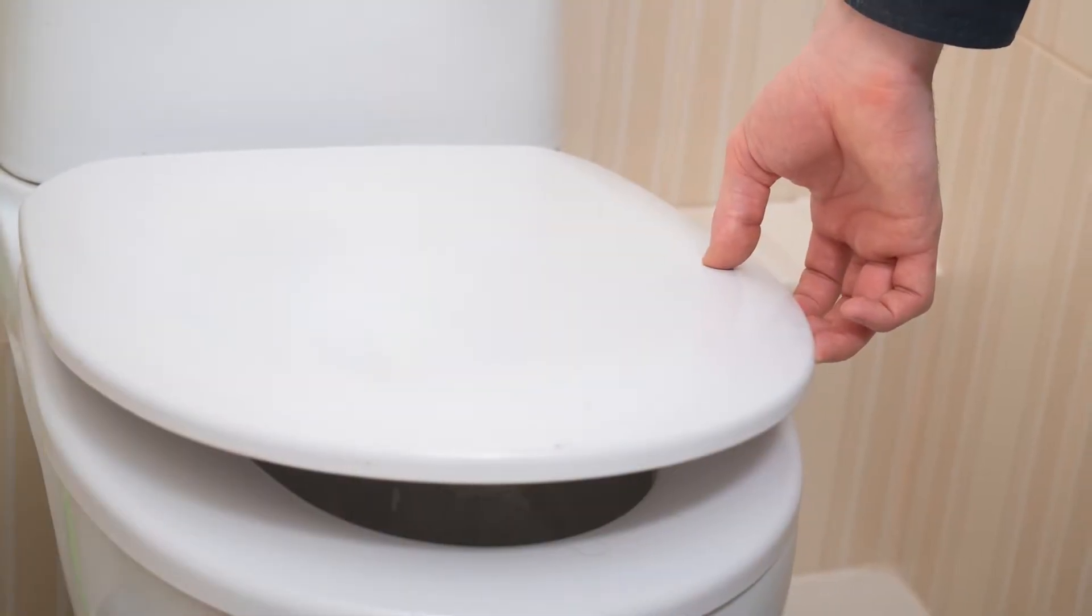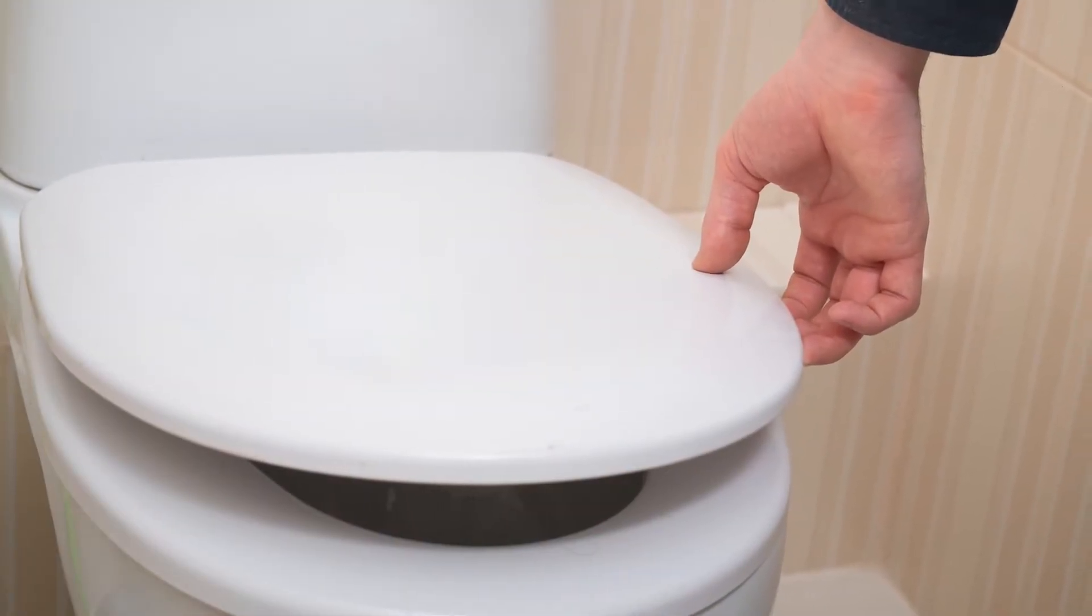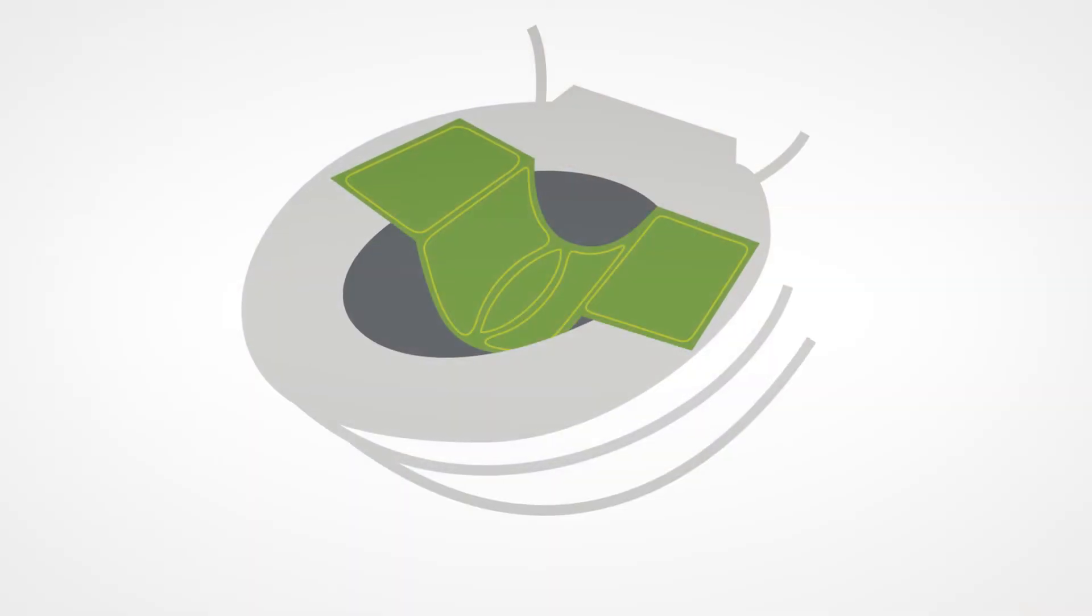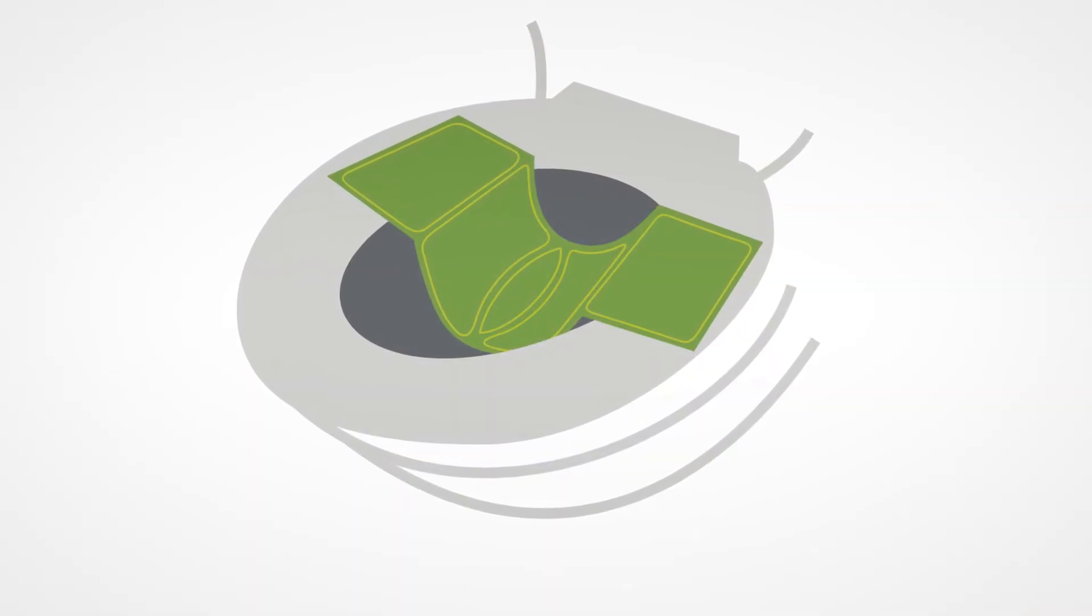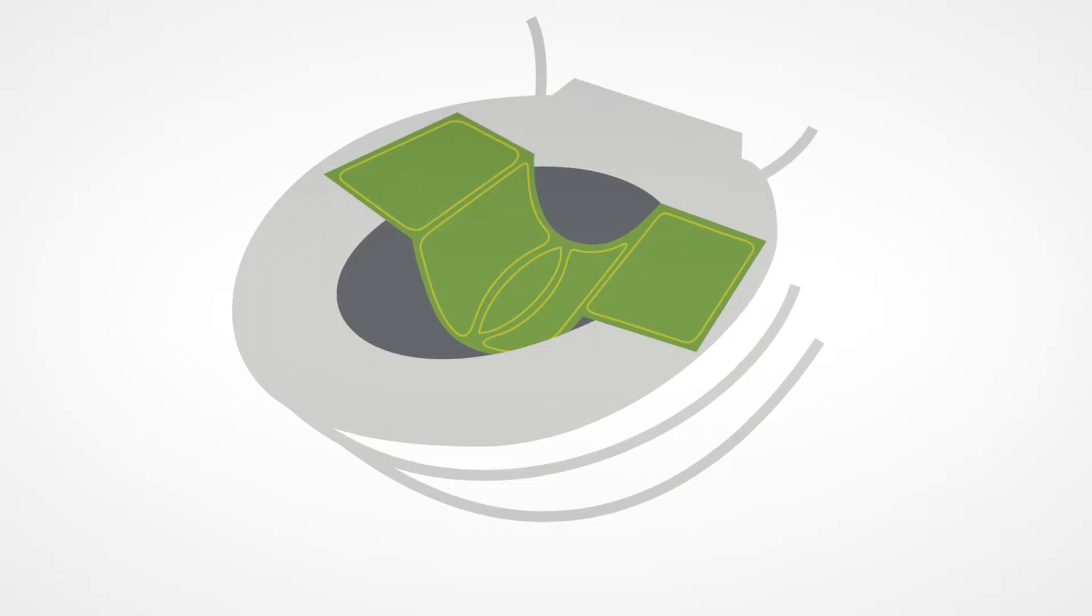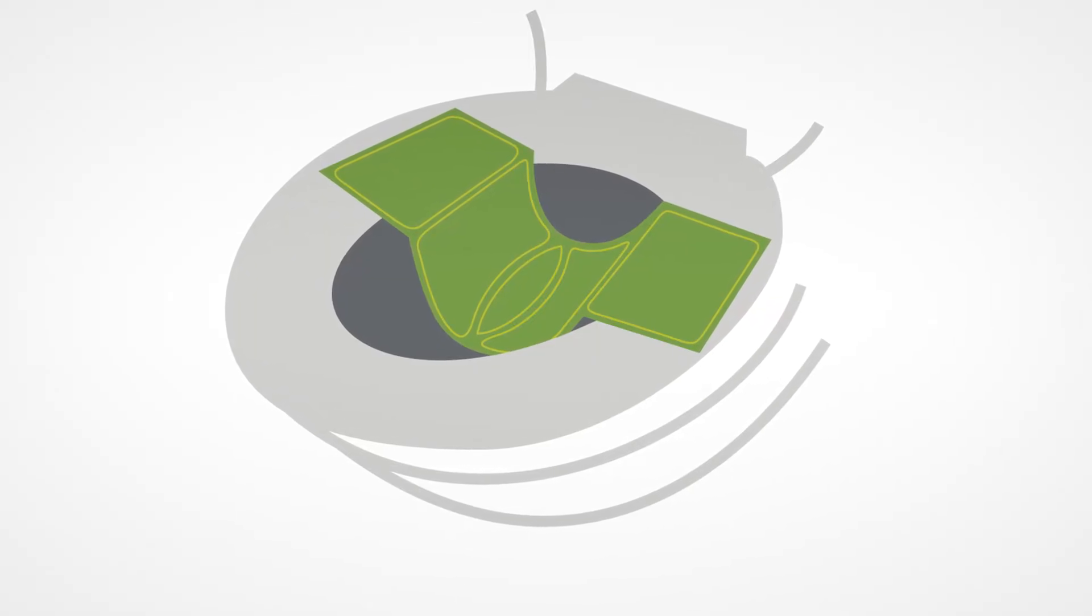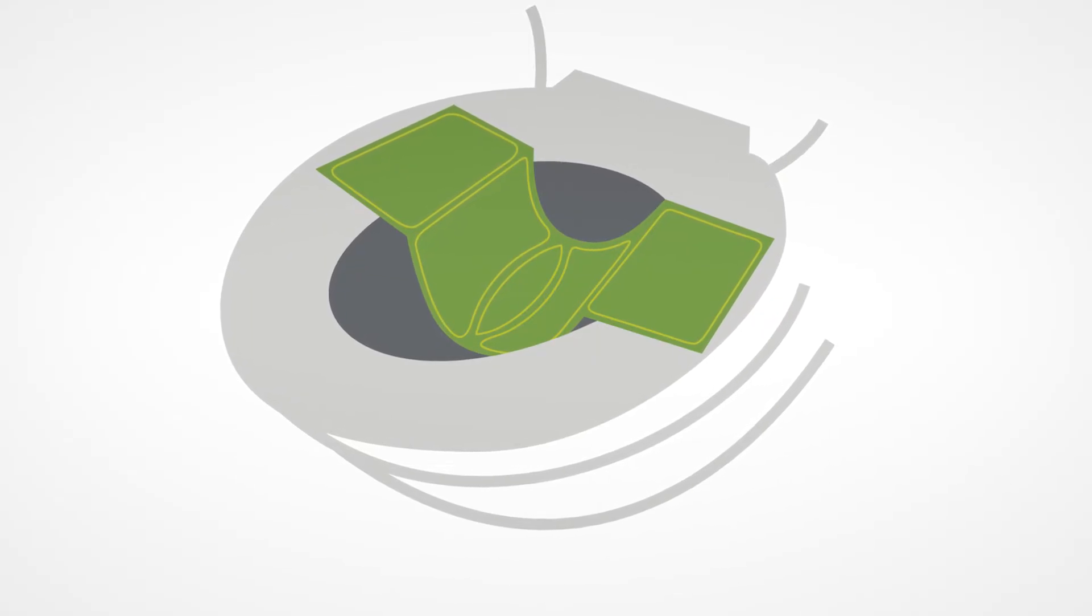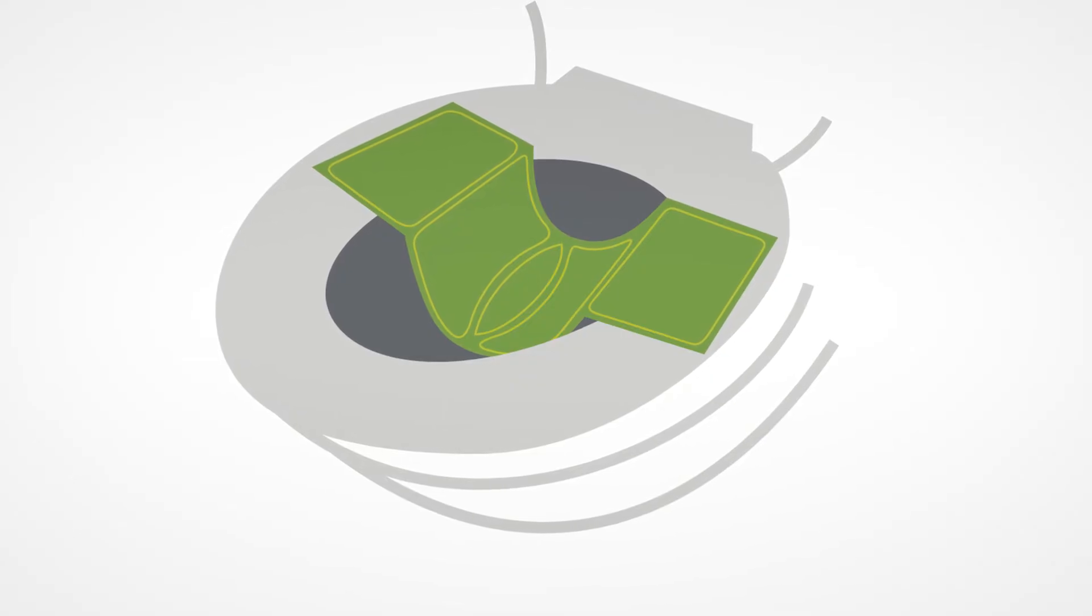When you're ready to have a bowel movement, the first step is to go to the bathroom and urinate. Next, unfold the paper stool catcher included in your kit. Use the sticky edges to adhere it to the toilet seat. Sit on the toilet so that your bowel movement falls onto the paper catcher.